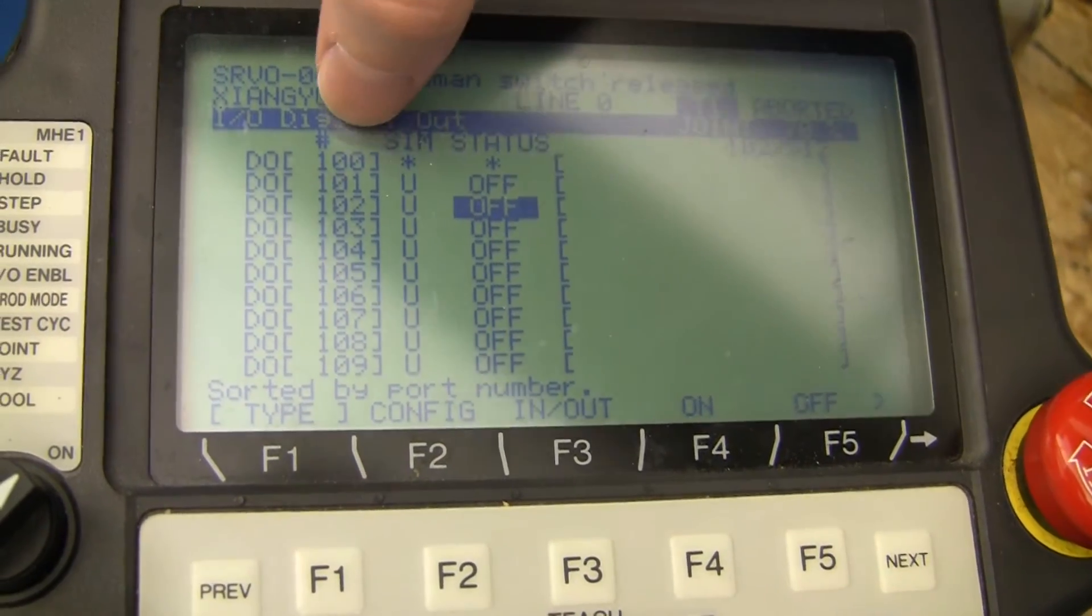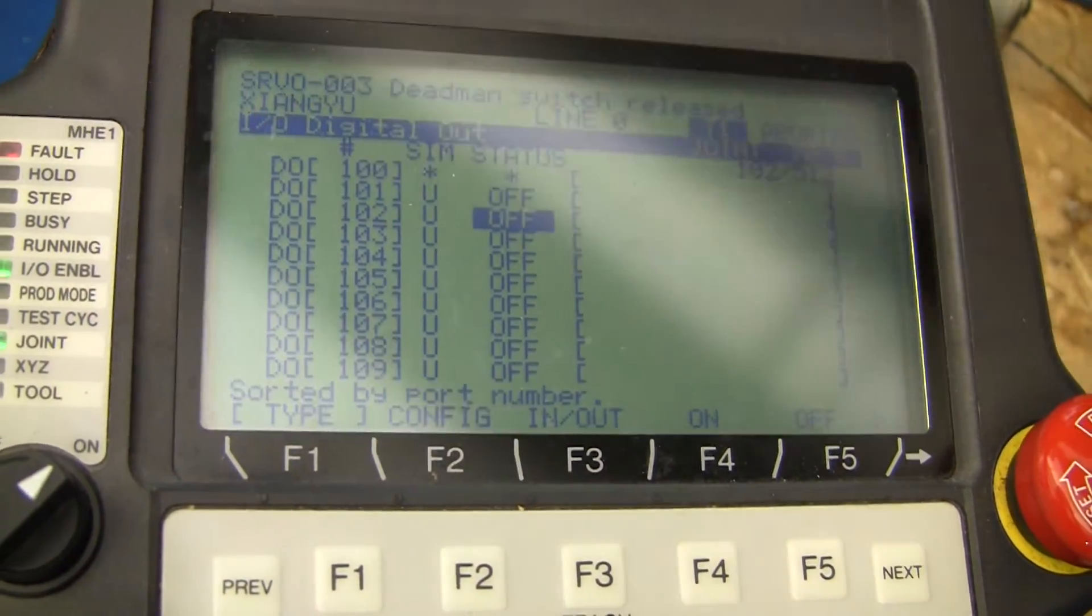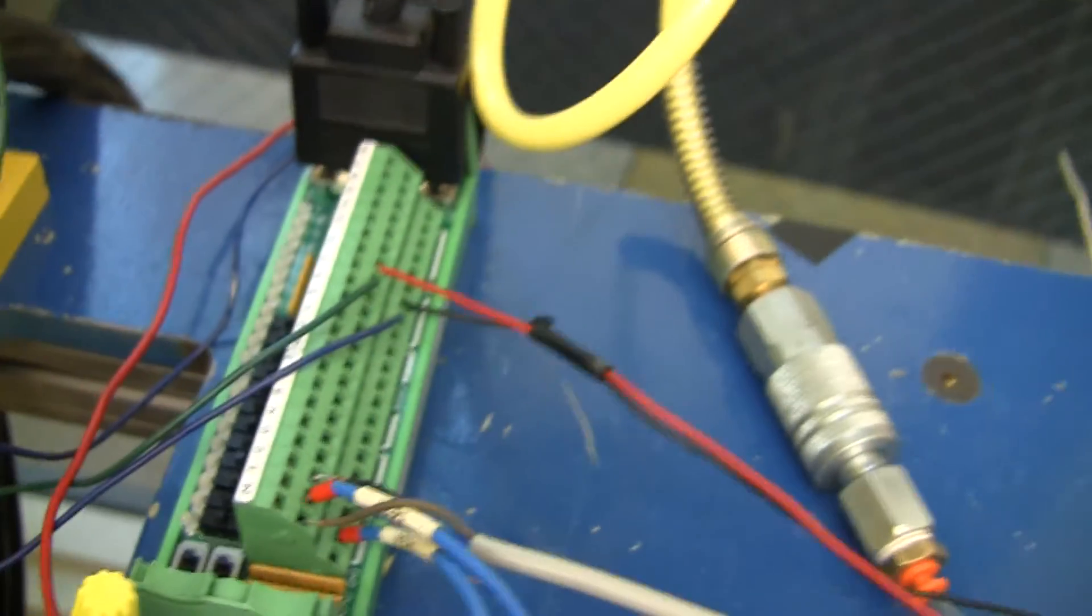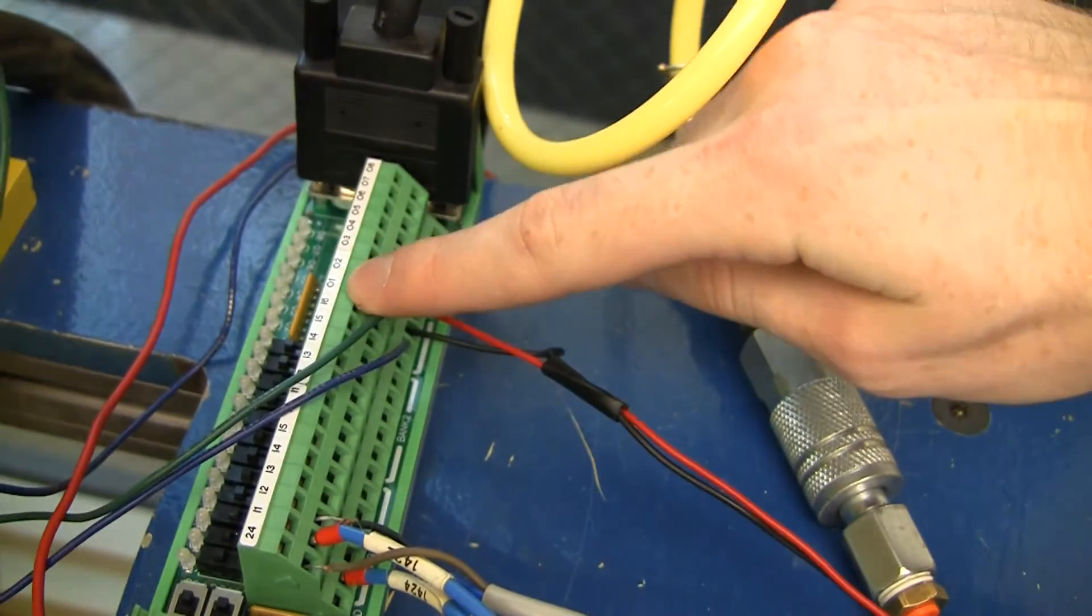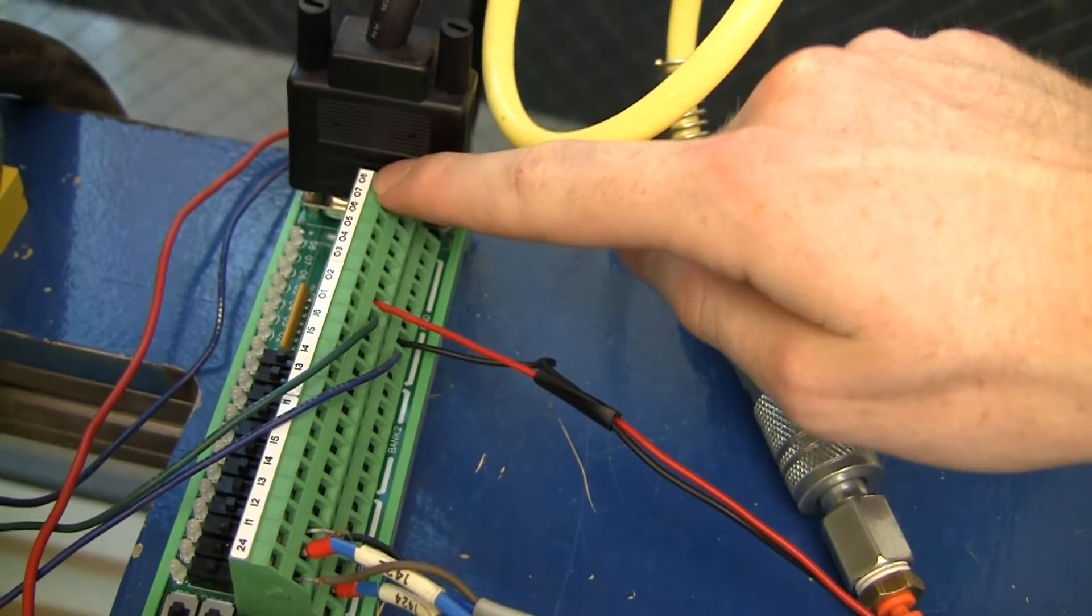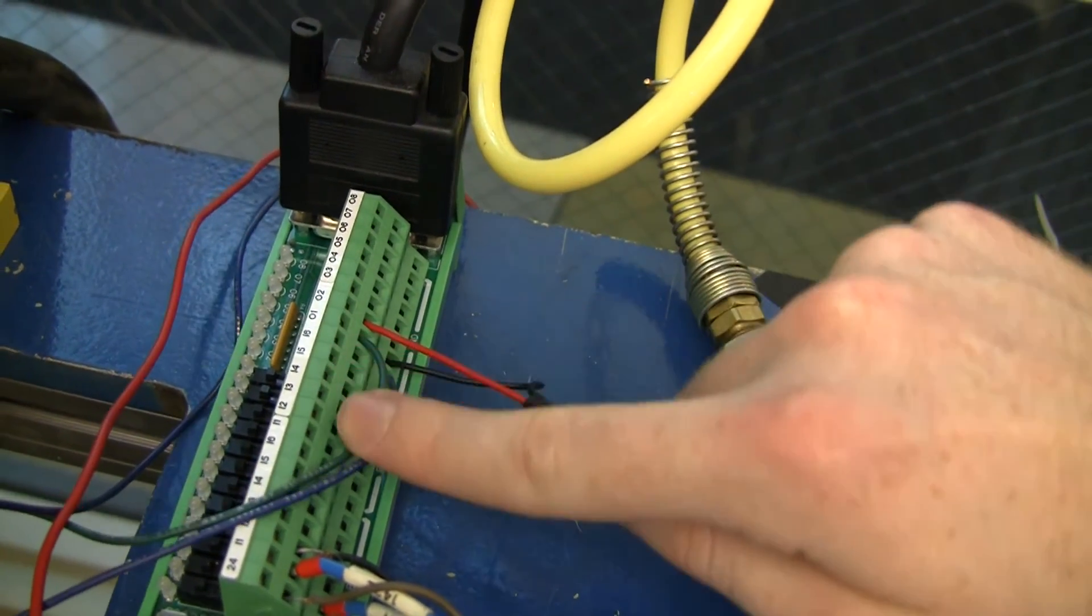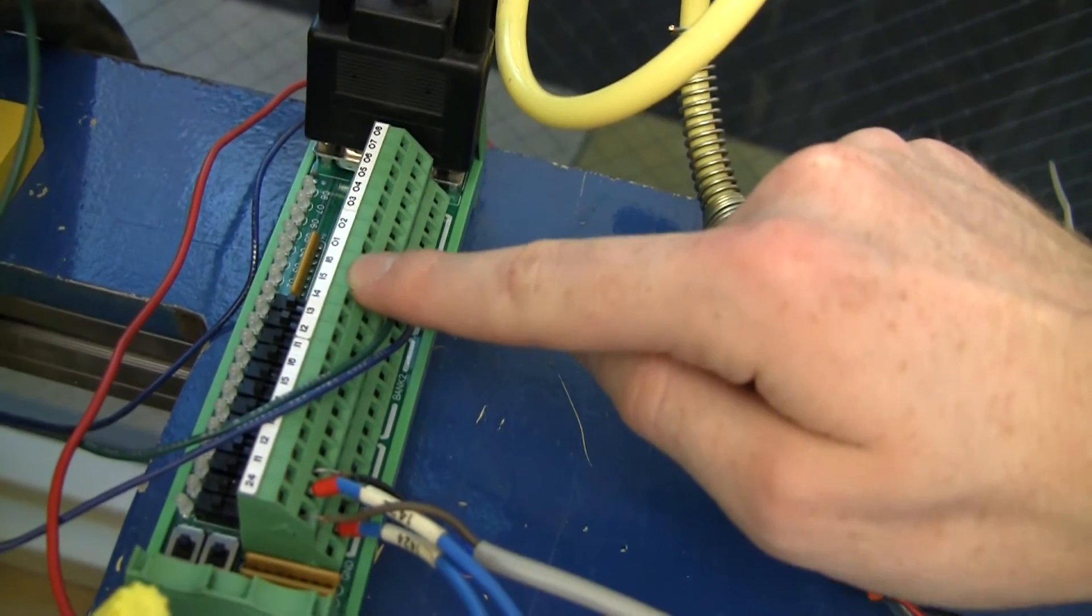The ones that we're going to be using in this class start at 101 and will go to 108. So this will count as 101, this will count as 108. Same for inputs. Inputs only go to 6.